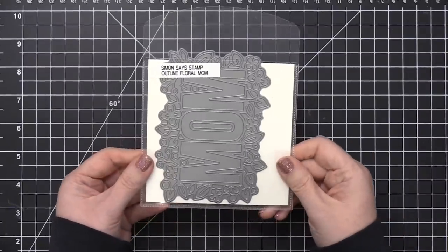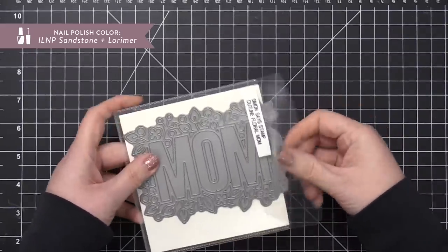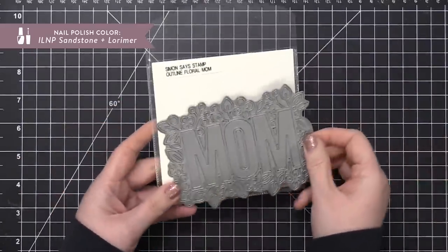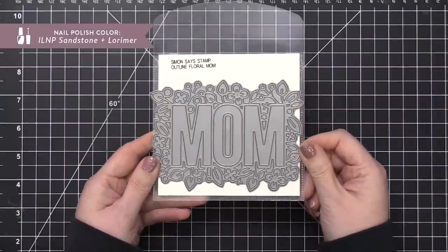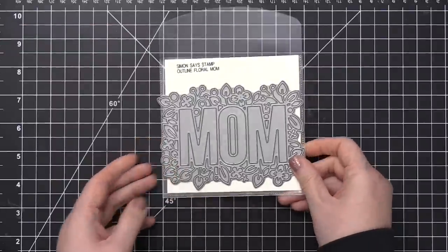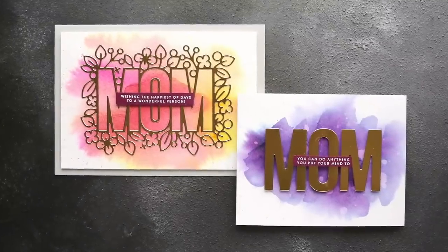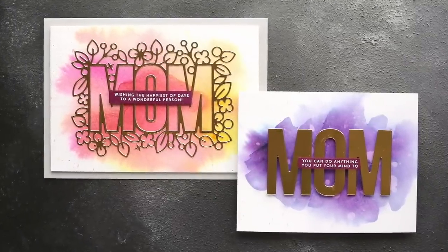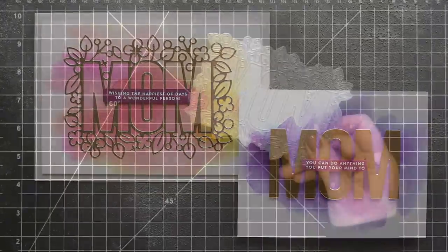So this is the Outline Floral Mom die, and it's nice and big, it's sized perfectly for an A2 card. So you could use this die all by itself, and it creates a beautiful card. I'm gonna be creating two cards, both with the watercolor backgrounds, and they both have the die cut using gold foil cardstock.